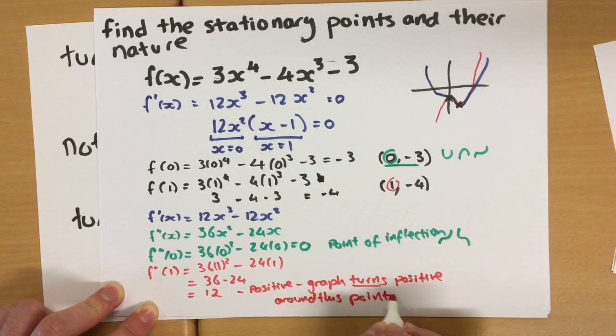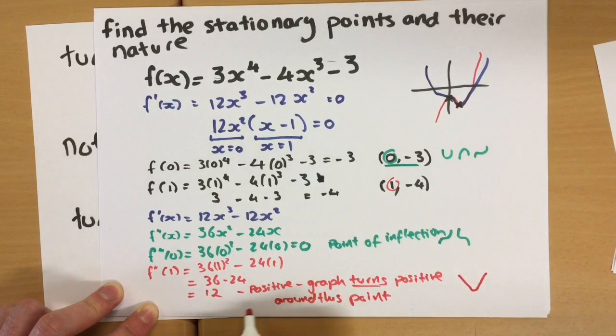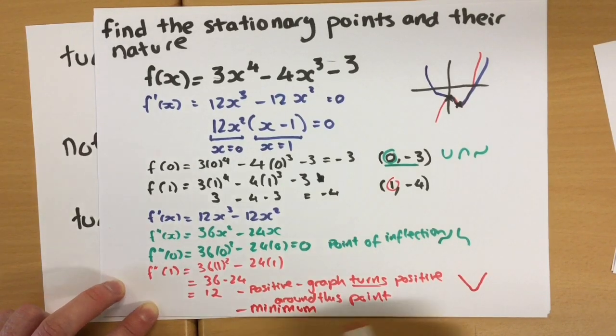And for graph to turn positive, it must come down first, then turn positive. So in fact, it is a minimum value. Okay, it's turning positive.